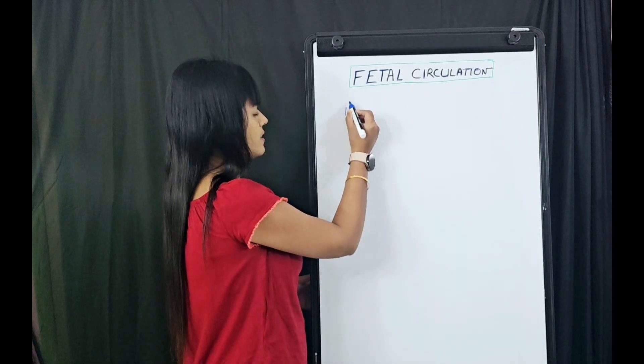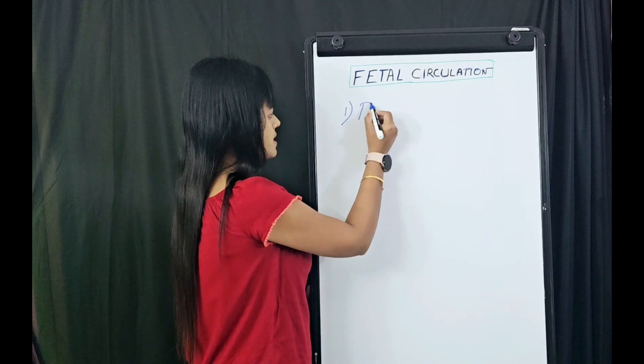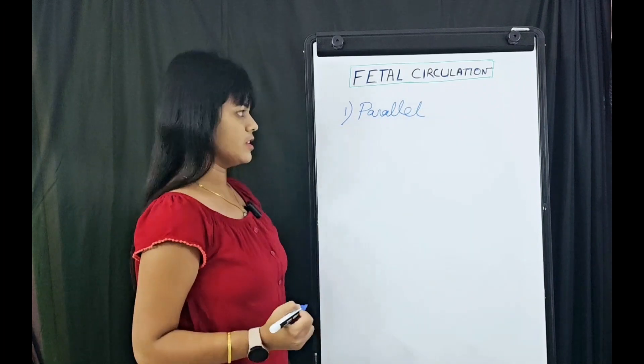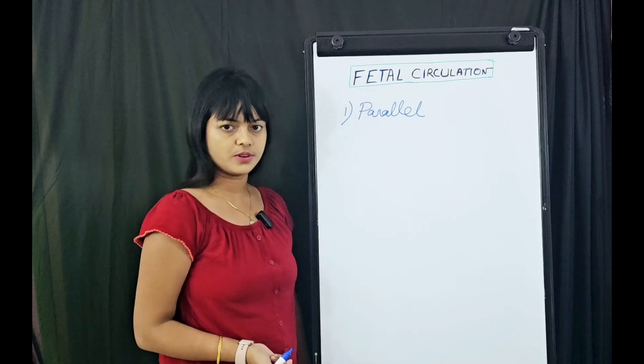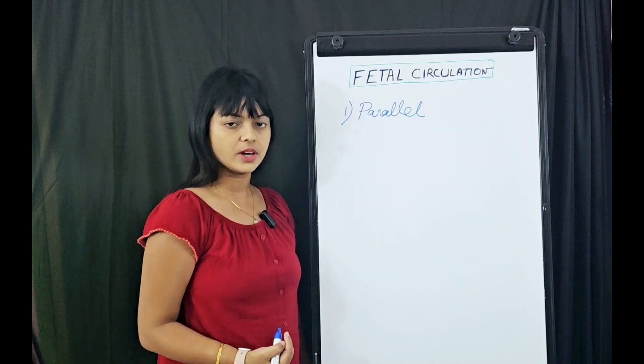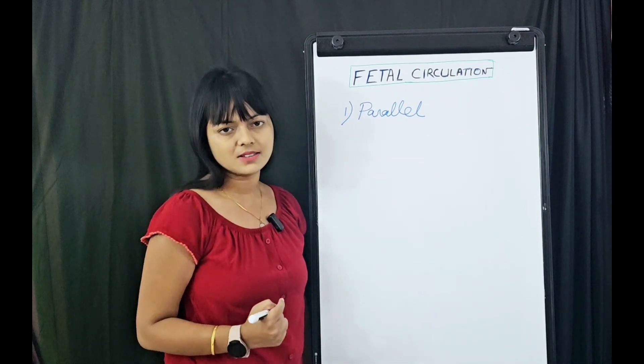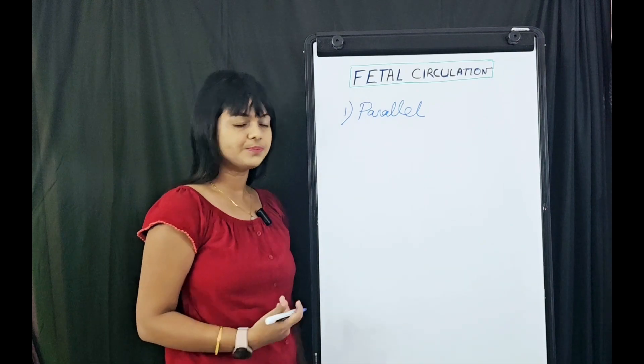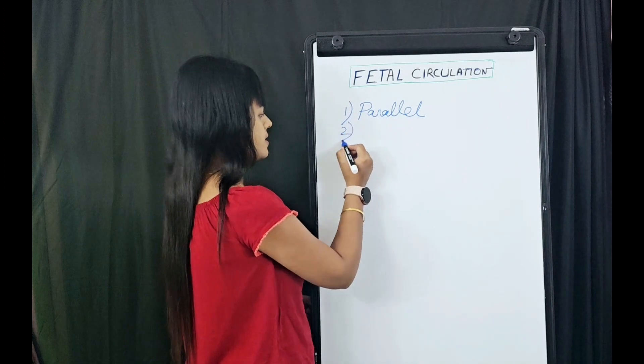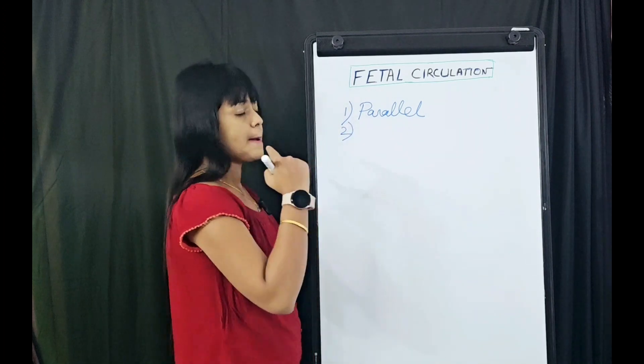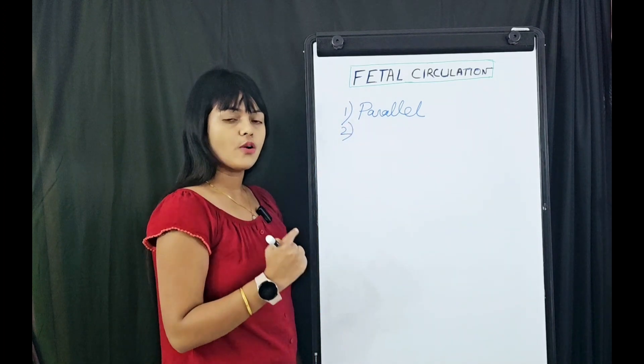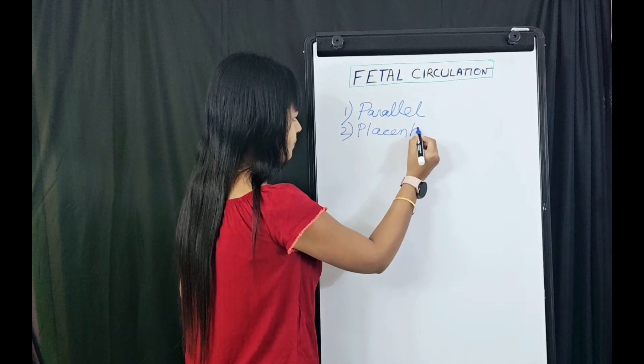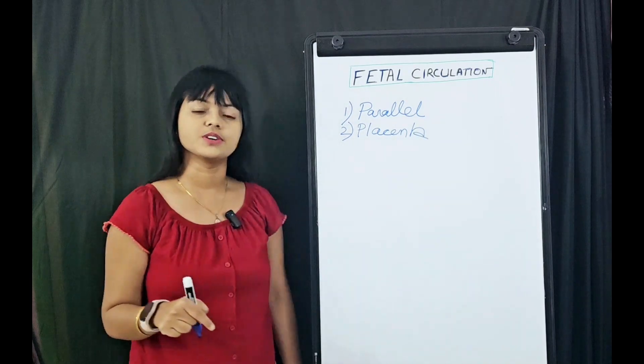What is so unique about fetal circulation? You need to remember that fetal circulation is parallel in nature, contrary to the adult or neonatal circulation which occurs in series. This is a parallel circuit where the left ventricle and right ventricle work parallelly.